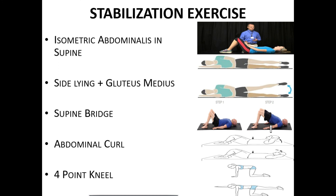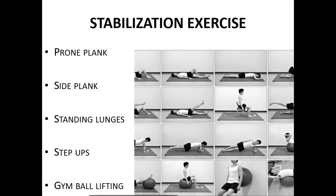Stabilization exercises include: isometric abdominals in supine — look at the picture. Side-lying with gluteus medius. Supine bridge. Abdominal crunches in steps. Prone plank and side plank. Static lunges, step-ups, gym ball, and lifting exercises.